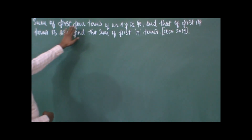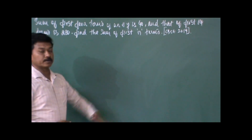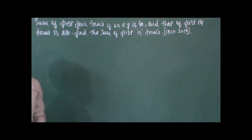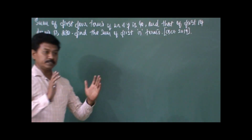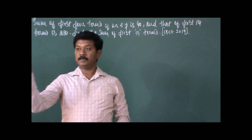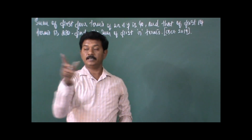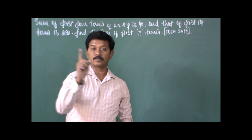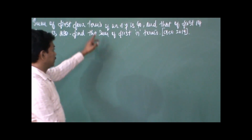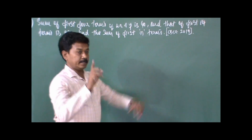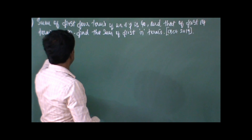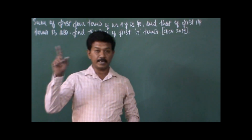Problem 1: Sum of first four terms of an AP is 40. In that AP, the first four terms are A, A+D, A+2D, A+3D. After adding all four terms he gets the sum as 40. And the sum of the first 14 terms is 280. So in the same AP, starting from the first term to the 14th term, the sum is 280. Using these two pieces of data, find the sum of the first n terms.